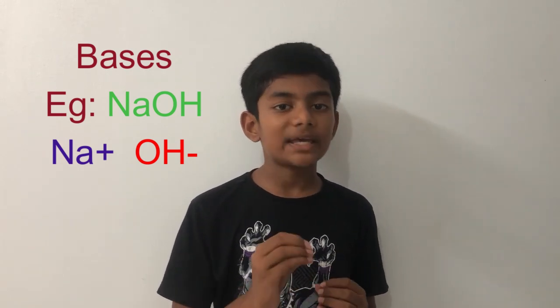Now let's see about bases. Bases are the compounds which produce OH⁻ ions in water. For example, NaOH, sodium hydroxide or caustic soda. When put into water, this creates a Na⁺ ion and an OH⁻ ion. So we can conclude that it is a base.